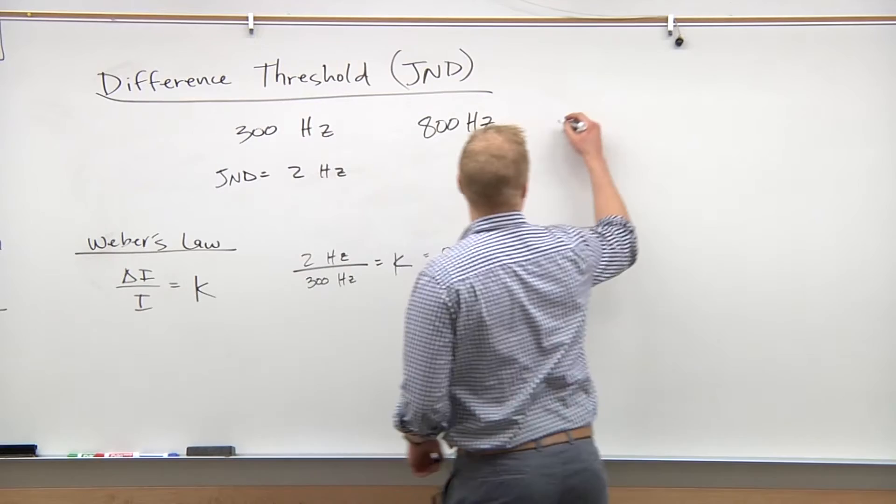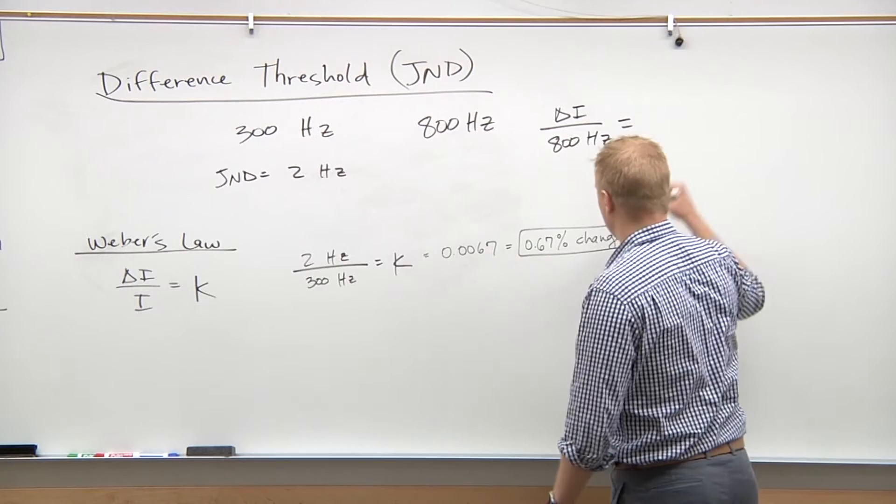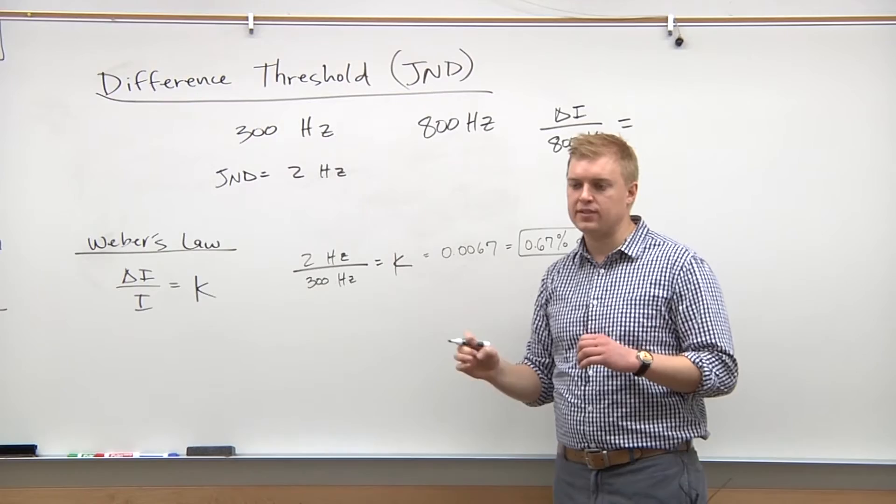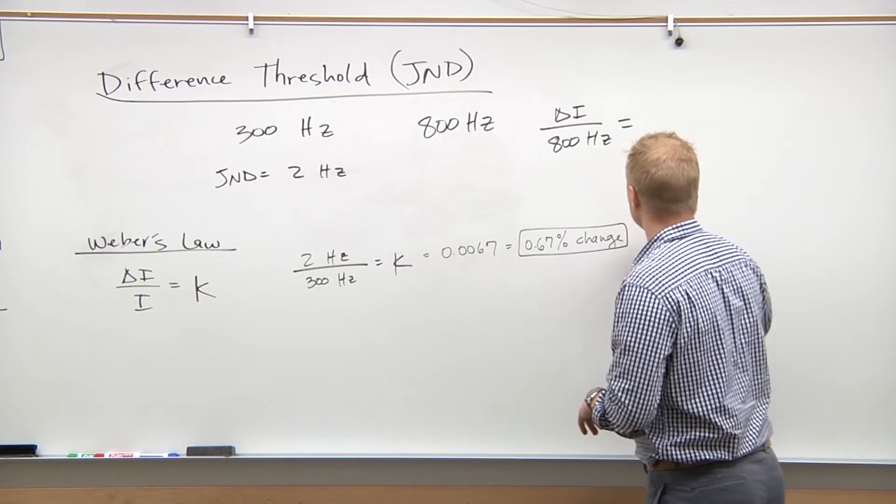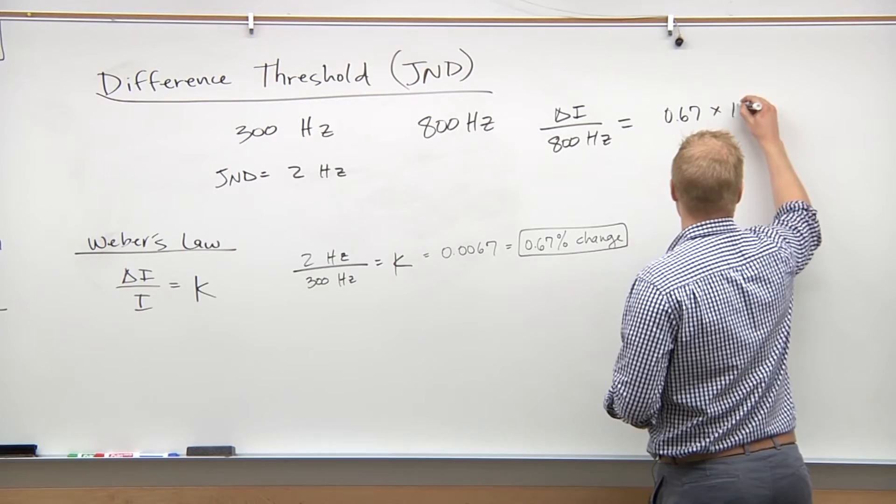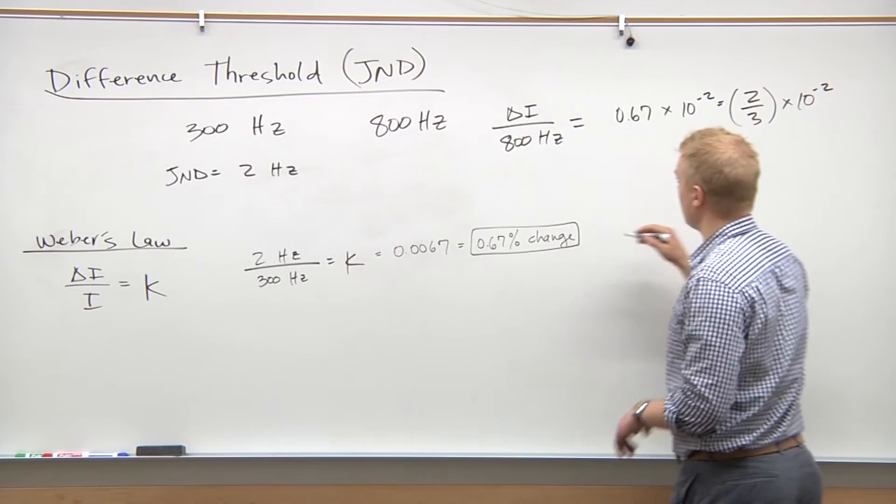Now we're looking for the delta i, so we got delta i is the value that we're looking for over the original stimulus, which is 800 hertz, equals - let me write this out. Just a quick side note for the MCAT, to keep things simple, try to keep things in scientific notation as much as possible. It will make your life millions of times easier. So I'm going to write this as 0.67 times 10 to the negative 2, and this could also be written as two thirds times 10 to the negative two.